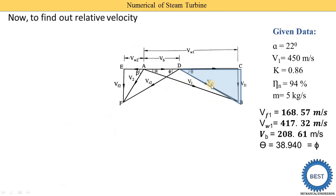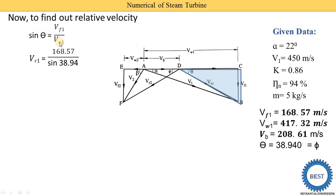We calculate Vr1, the relative velocity at inlet. Using sine theta equals Vf1 divided by Vr1, Vr1 equals Vf1 divided by sin theta. You can also use cos theta equals (Vw1 minus Vb) divided by Vr1. With Vf1 equal to 168.57 and theta equal to 38.94, we get Vr1 equal to 268.20 meter per second. All parameters of the inlet velocity triangle are now found.